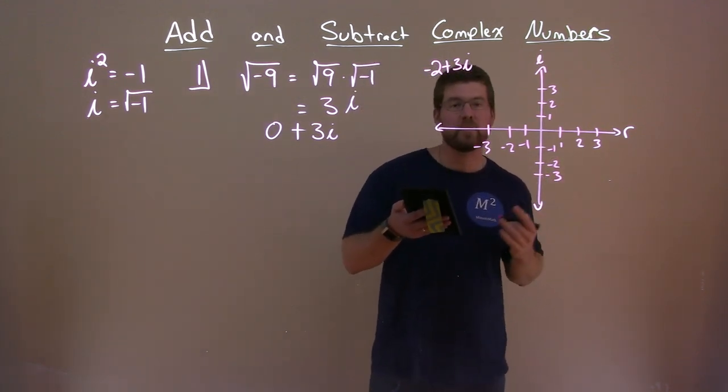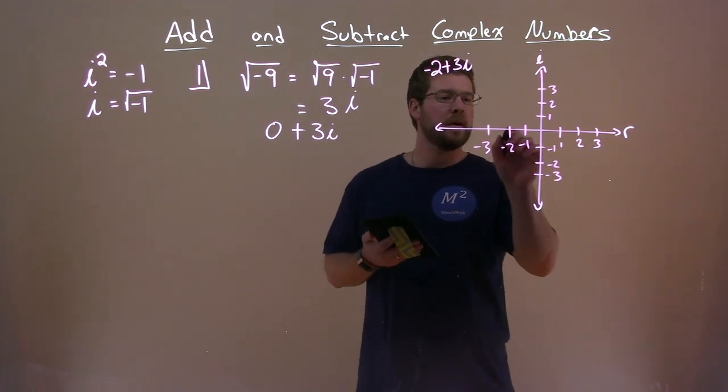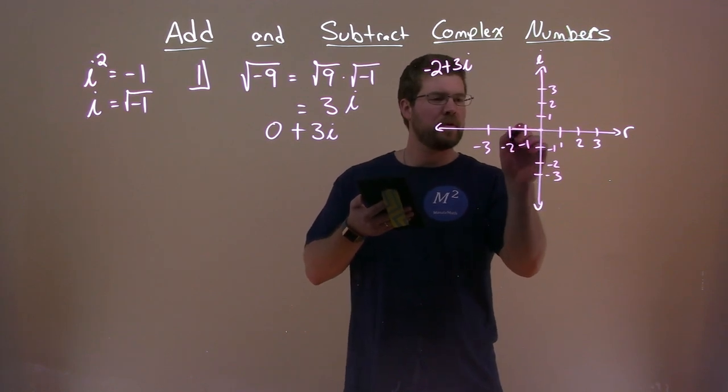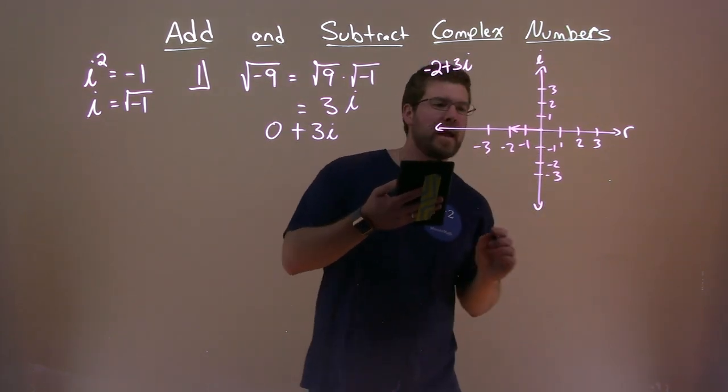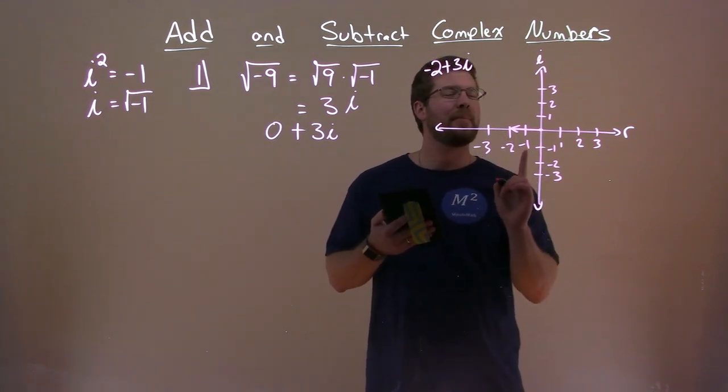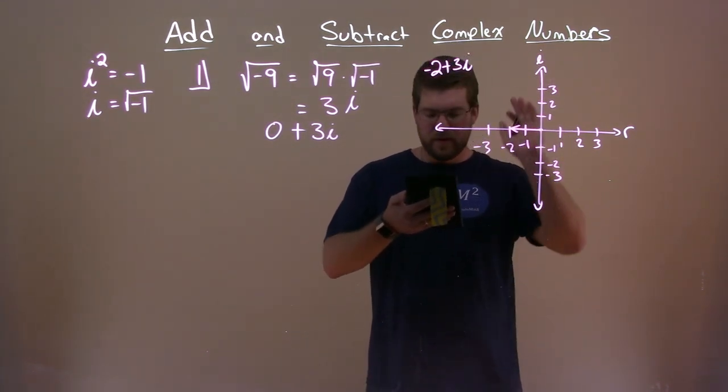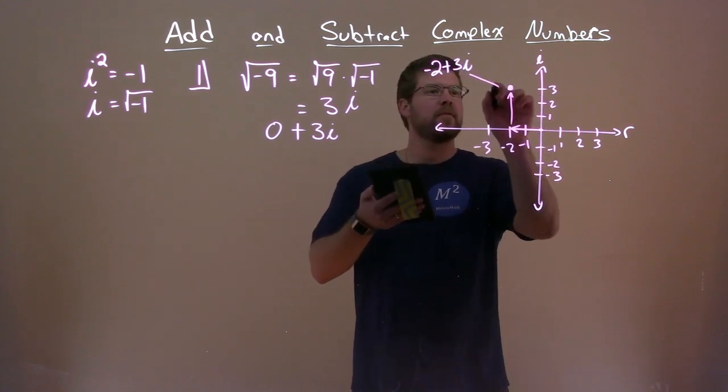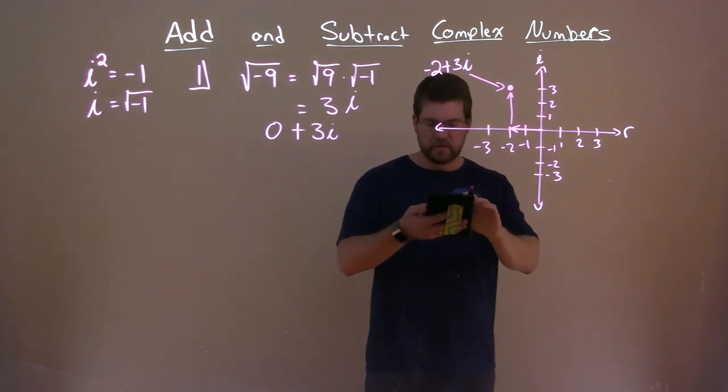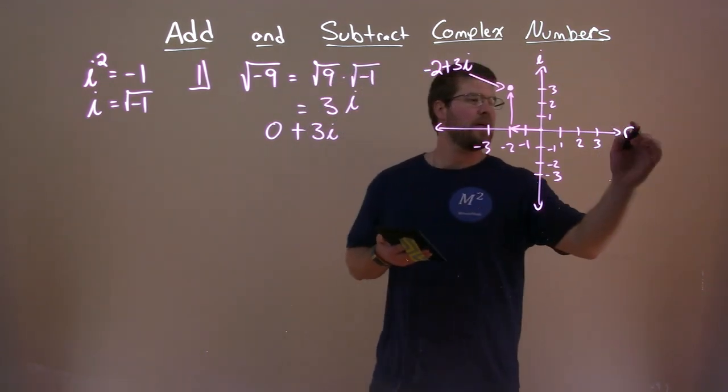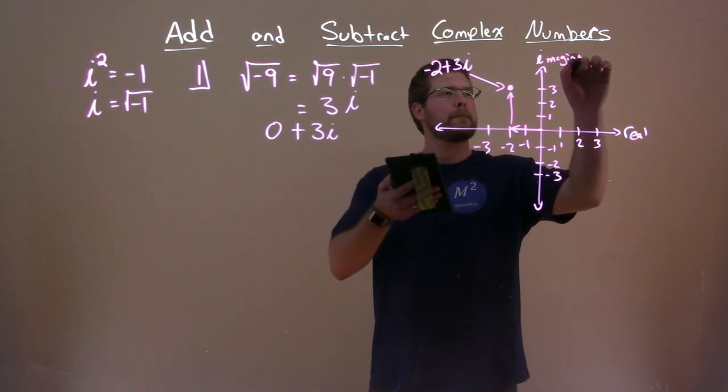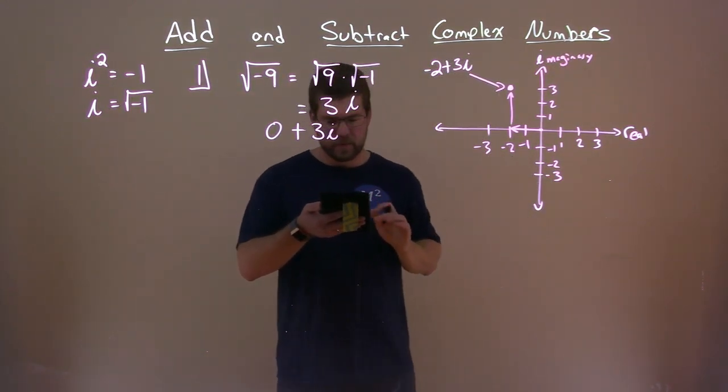Our negative 2 plus 3i, negative 2 will refer to the real number, so we would go over here to negative 2 from the origin. So we would go over to the left 2, and then the 3i would go up 3i values on the i-axis, so we would go up 3 right here, and that would be our point that we're looking for, negative 2 plus 3i. So again, we have our real and our imaginary axis, or axes.